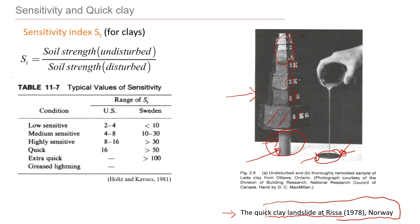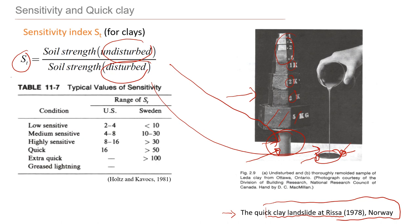Let's see how we can investigate it. We can put a number on this sensitivity and define if clay is sensitive or not sensitive. The way to do it is to find the sensitivity index, which is defined as the ratio between the strength of the soil when it's undisturbed — so when it's very strong — and the strength of the same soil when it's disturbed, in this case remolded.